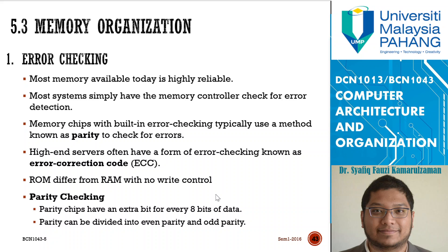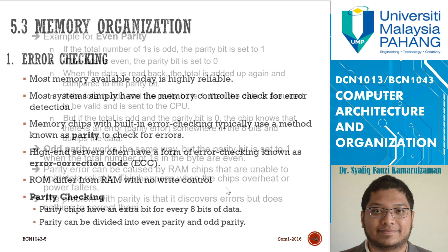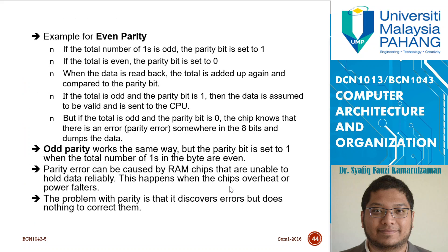Parity can be divided into even parity and odd parity. Even parity means if the total number of binary 1s is odd, the parity bit is set to 1. If the total is even, the parity bit is set to 0. When the data is read back and the parity bit differs from the total number of bits, this means something is wrong with the data — a parity error — and error checking must be conducted.